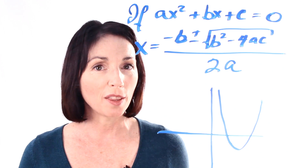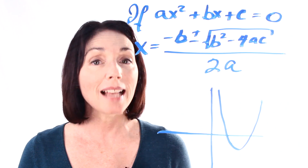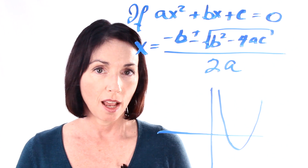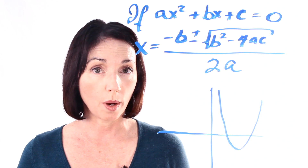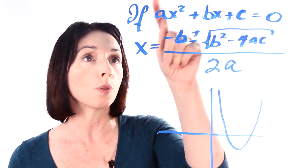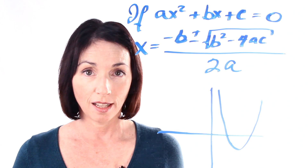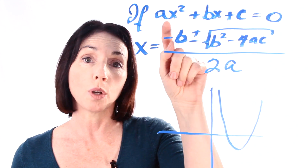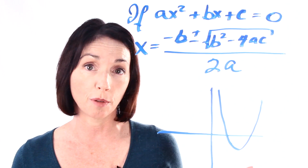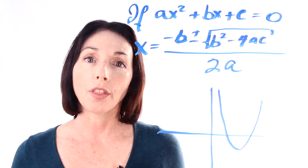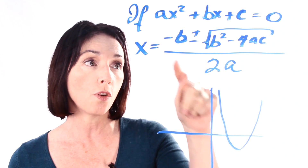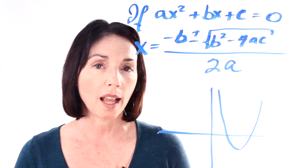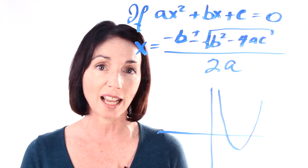A lot of people find the quadratic formula intimidating to look at, but it's actually pretty straightforward to use. There are three basic steps. The first one is to make sure that your quadratic equation is in the right form for the condition. The second step is to correctly identify a, b, and c — the two coefficients and the constant term. And the third step is just plugging those numbers into the formula and calculating.